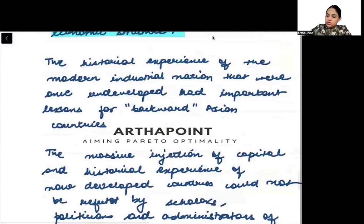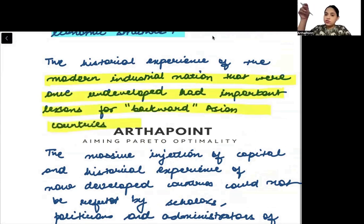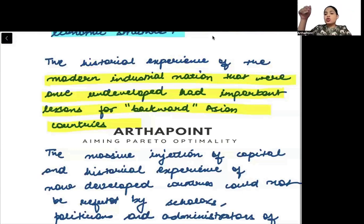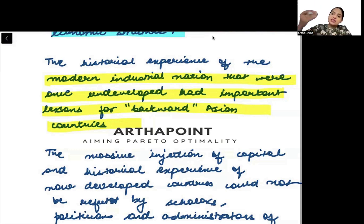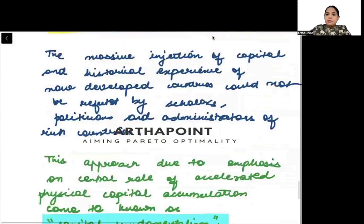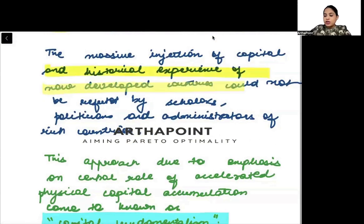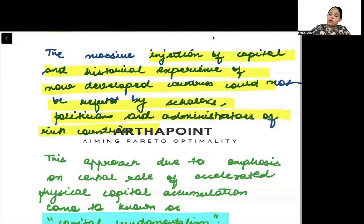The historical experience of modern industrial nations that were once underdeveloped had important lessons for the backward Asian countries. Those countries which are now developed were once underdeveloped, so developing countries could have learned from their experience. The massive injection of capital and historical experience of now-developed countries could not be refuted by scholars, politicians, and administrators of rich countries.